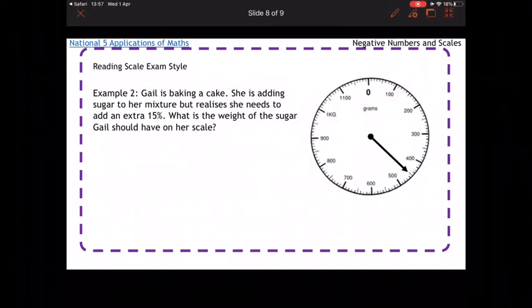Okay, example two. So Gail's baking a cake, and she's got a scale here. It's just halfway between 400 and 500, which means it's going to be 450.